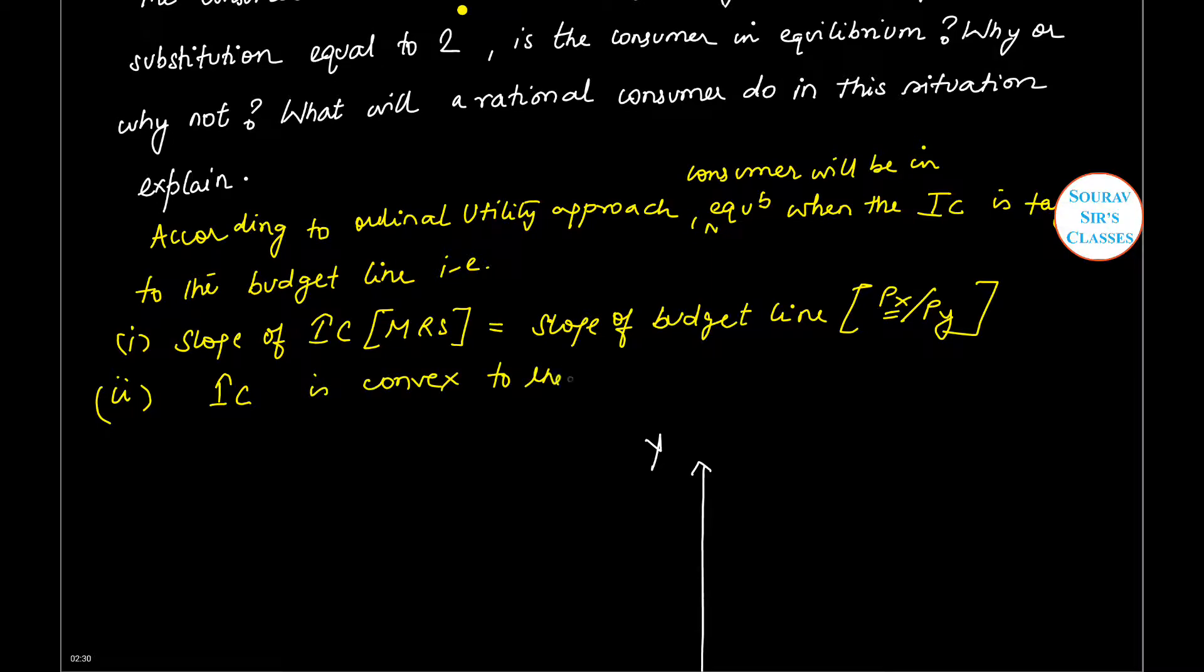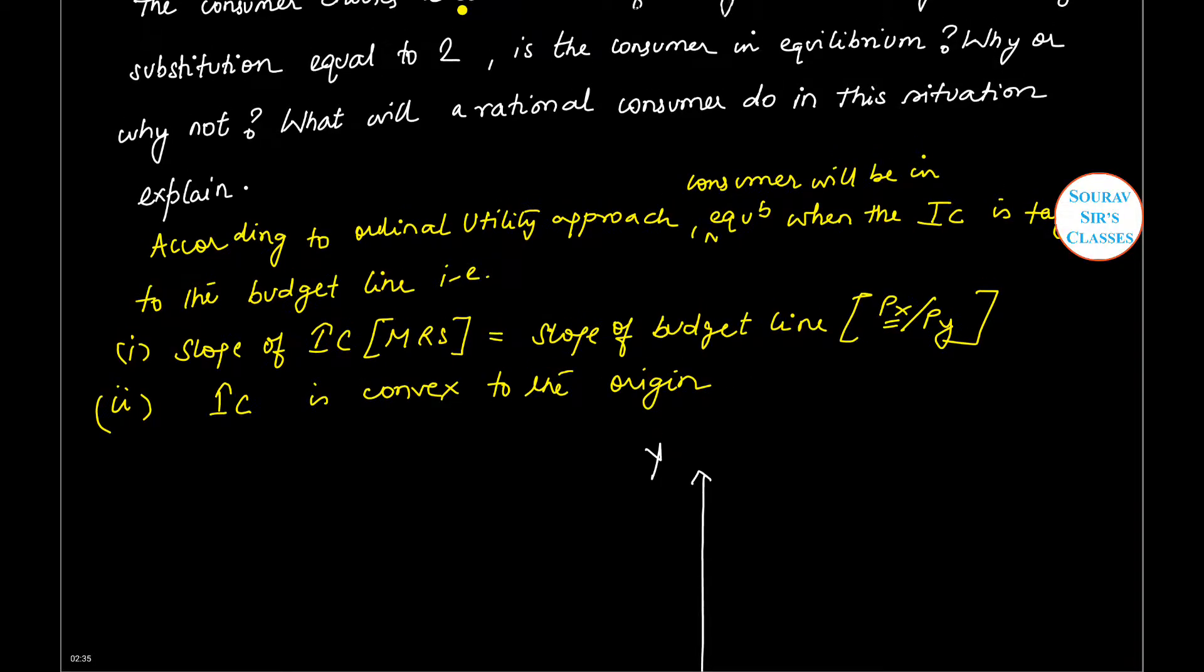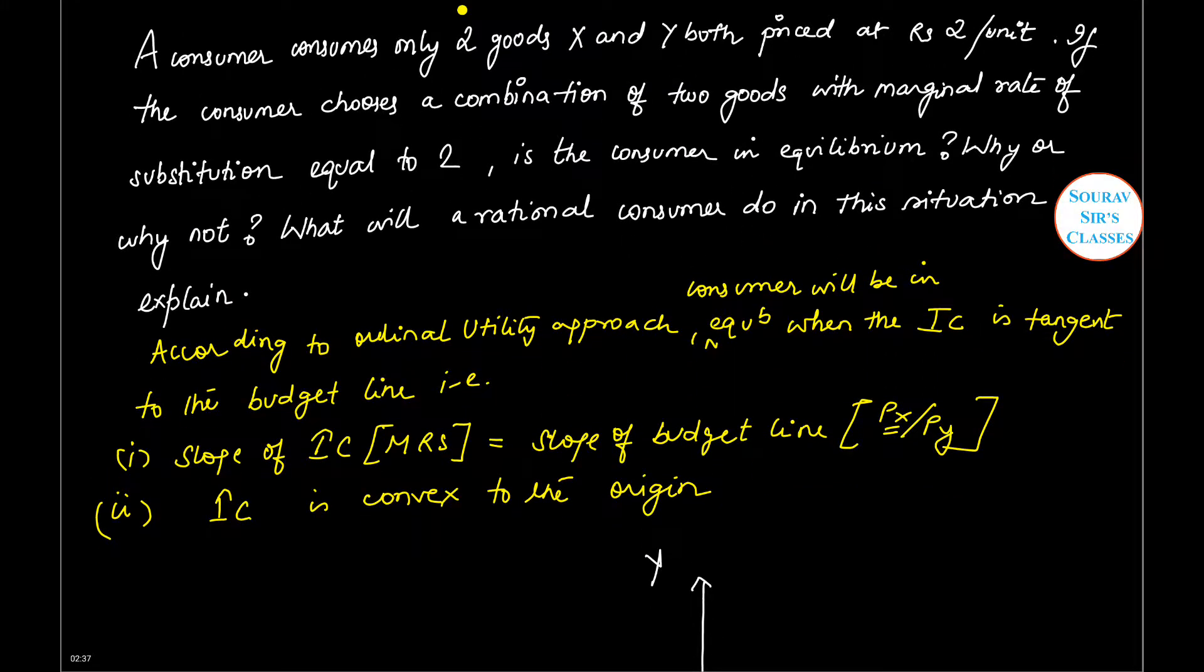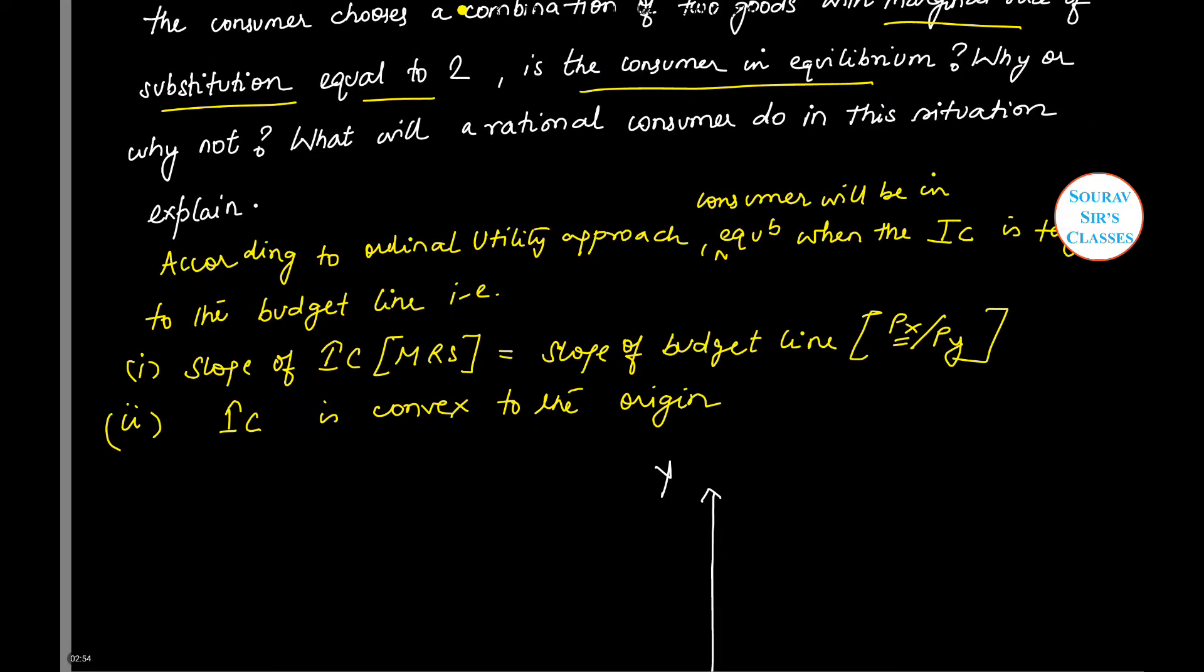Now let us see what information is provided in this particular question. We have two goods X and Y, and the price of both goods, Px and Py, are both 2. The marginal rate of substitution is equal to 2. We need to find out whether the consumer is in equilibrium or not.